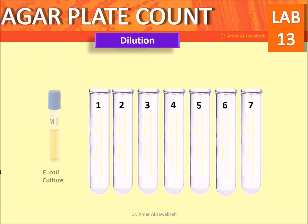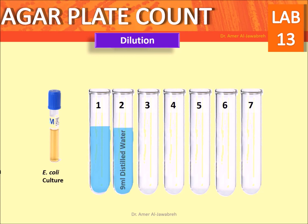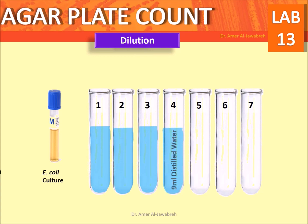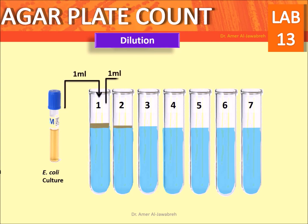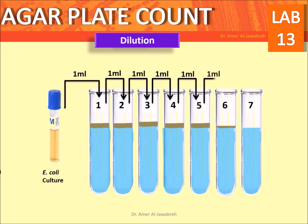Dilution procedure: take 7 tubes and add 9 ml of distilled water in each one. Add 1 ml of E. coli culture broth and add to tube 1. Mix, then transfer 1 ml from tube 1 to tube 2, and so on until tube 7.